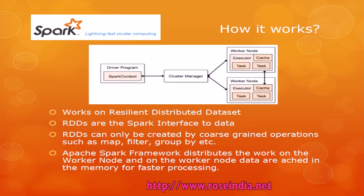How does Apache Spark Framework work? The core fundamental of Apache Spark Framework is RDDs, and it works as an interface to your data. RDDs stands for Resilient Distributed Dataset, and it is an immutable partitioned collection of records. Apache Spark Framework distributes the work on the worker nodes, and the worker node data are cached in memory for faster processing.